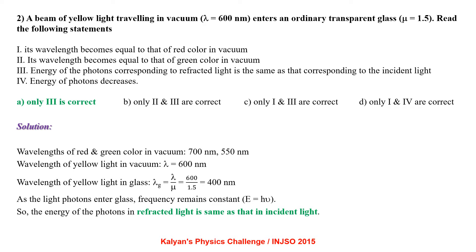The wavelength of yellow light in vacuum is 600 nm. So the wavelength of yellow light in glass, lambda glass, equals lambda divided by mu, which comes out to be 400 nm. As light photons enter glass, frequency remains the same. So the energy of the photons in the refracted light is the same as that of the incident light. So option A is correct.